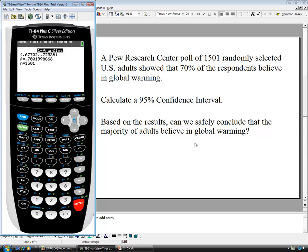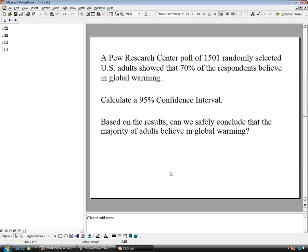Based on these results, can we safely conclude that a majority of adults believe in global warming? A majority would indicate more than 50%. This entire confidence interval goes between 67.7%, 72.3%. The entire interval is above the 50% threshold that we're looking for. Therefore, we have evidence to indicate that a majority of adults actually do believe in global warming, according to this study. That's the first example.